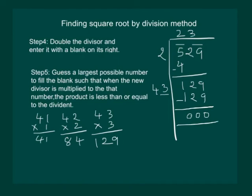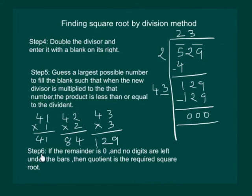So we can say that 23 is the square root of 529. Step 6: If the remainder is 0 and no digits are left under the bars, then the quotient is the required square root. That means that the square root of 529 is equal to 23.